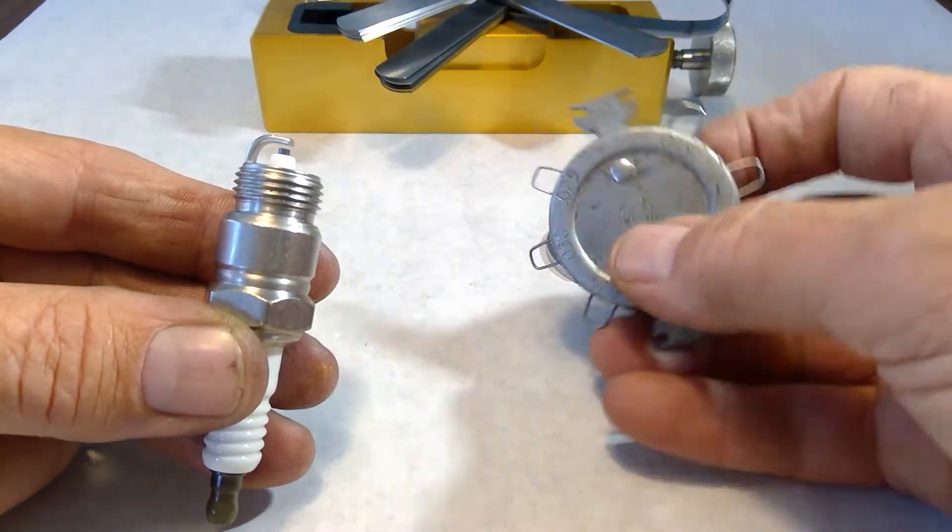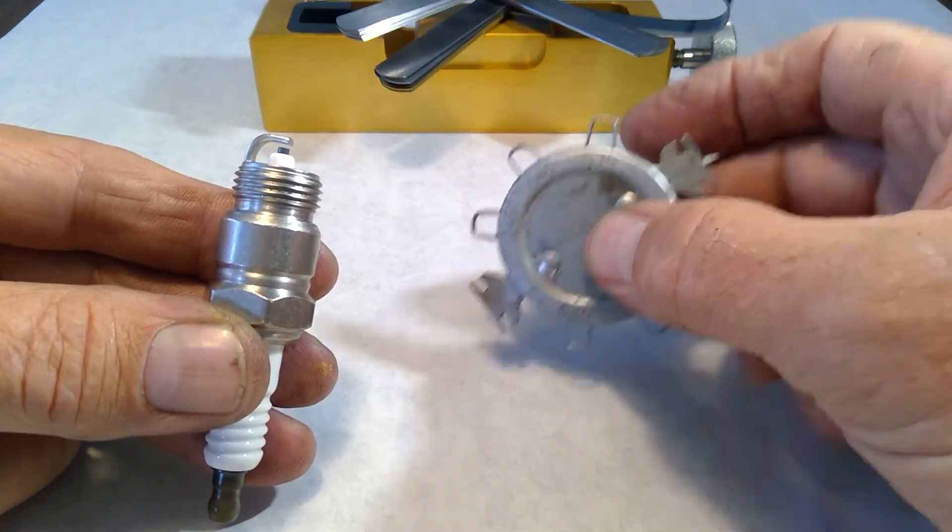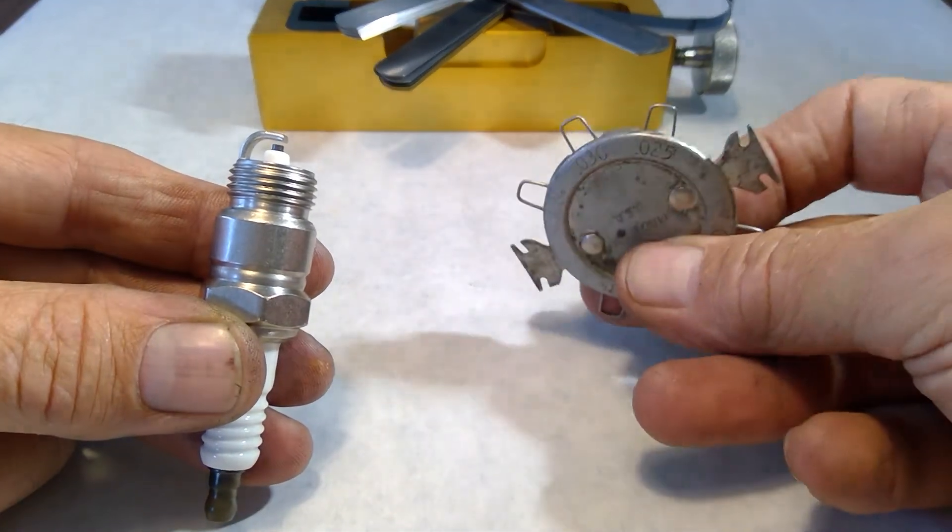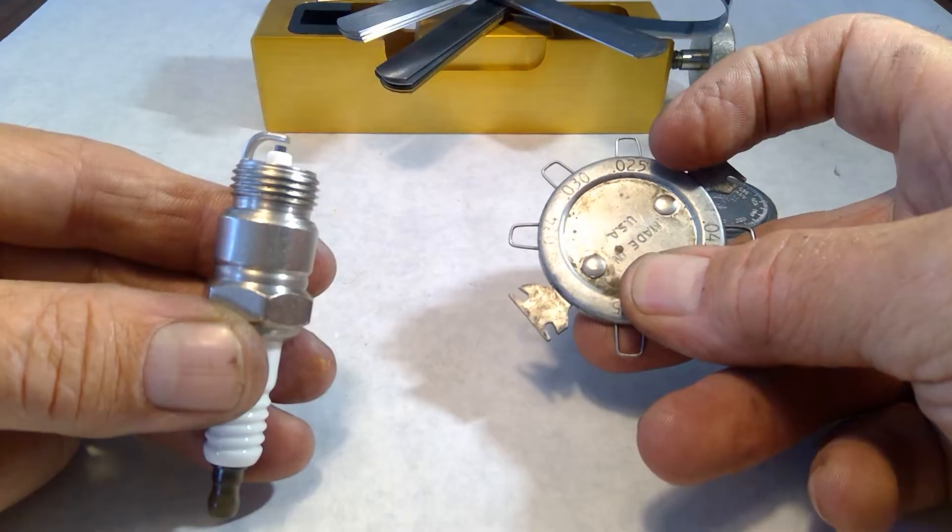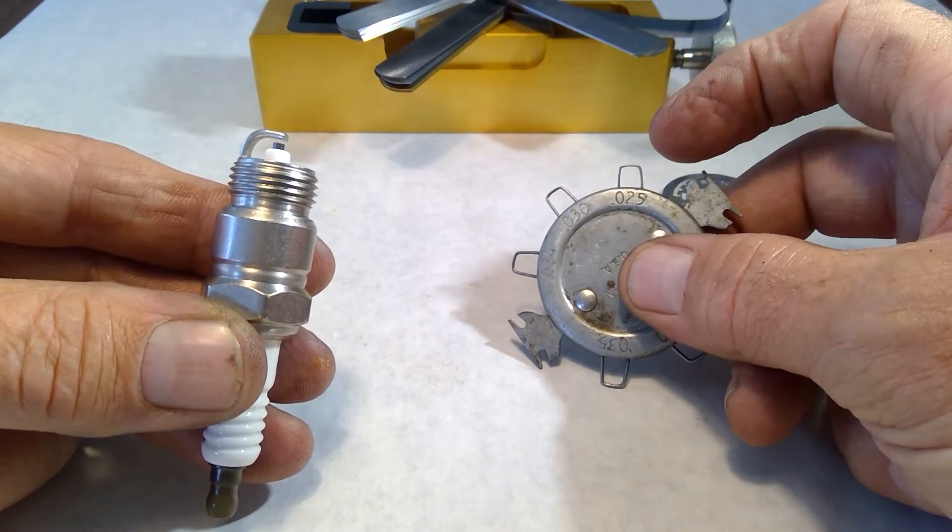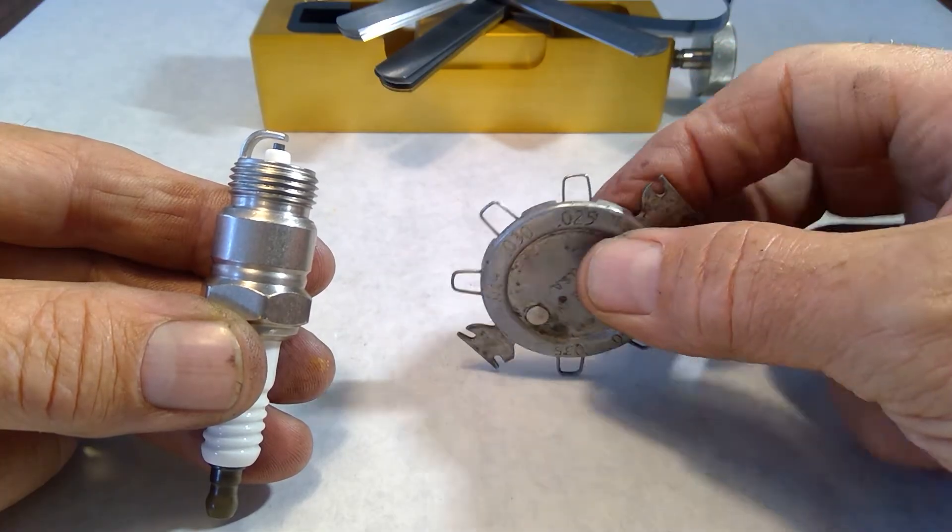Now, this is a tool that I can use to both set and measure the spark plug gap. This is an old-fashioned style wire feeler gauge, and you see that it's got a bunch of numbers on the outside diameter. Those numbers are the thickness of the wire in thousandths of an inch.